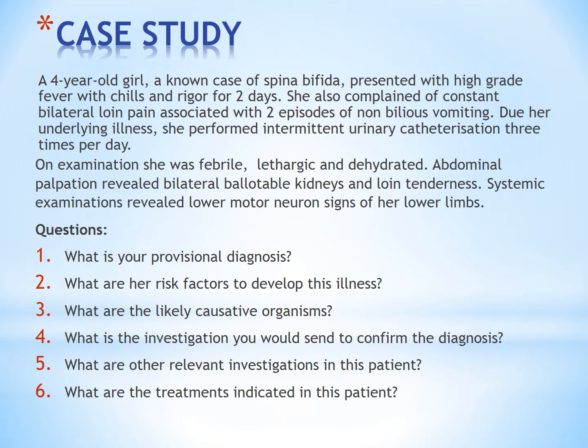Systemic examinations revealed lower motor neuron signs over her lower limbs. Questions: What is your provisional diagnosis? What are her risk factors to develop this illness? What are the likely causative organisms? What is the investigation you would send to confirm the diagnosis? What are other relevant investigations in this patient? What are the treatments indicated in this patient?